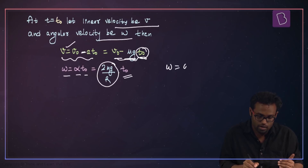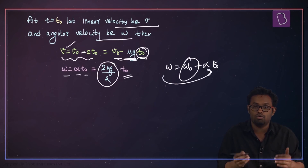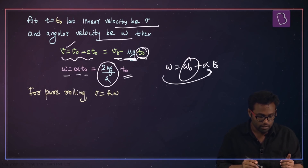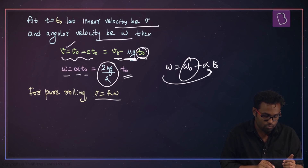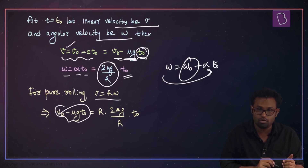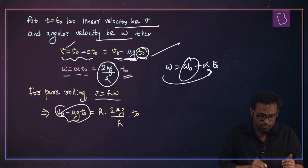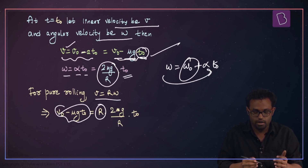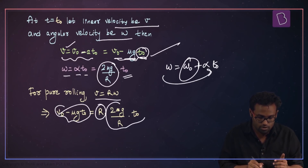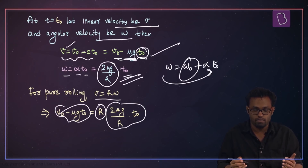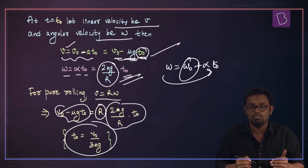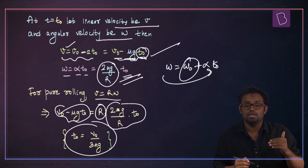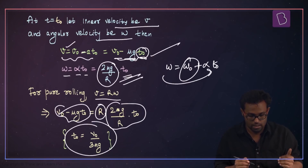Since initially angular velocity was zero, ω equals ω₀ plus α·t₀, and with ω₀ equal to zero this gives directly α·t₀. For pure rolling, v must equal rω. Substituting: v₀ minus μg·t₀ equals r times (2μg/r)·t₀, which gives t₀ equal to v₀ divided by 3μg. This is the time at which pure rolling starts.